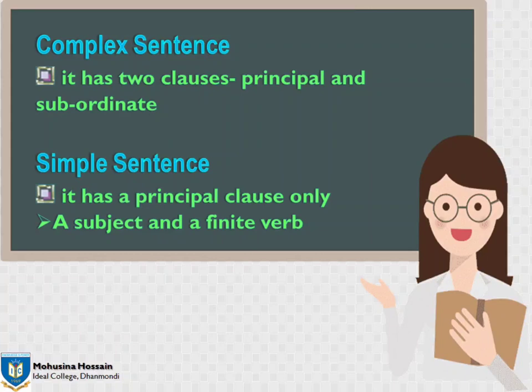Previous class এ আমরা Clause সম্পর্কে জেনে ছিলাম। তাই সেটা এখন আমাদের প্রয়োজন হবে। Complex Sentence এ দুটো Clause থাকে — একটি Principal Clause, or not Subordinate Clause। এই Sentence এ দুটো Subject এবং দুটো Finite Verb থাকে। আর Simple Sentence এ একটি Subject এবং একটি Finite Verb থাকে। এবং it has a Principal Clause only. Now, let's see Complex and Simple Sentences through the Changing Rules and Examples.